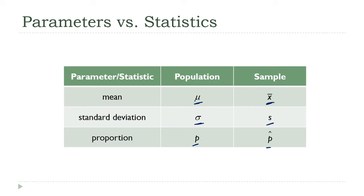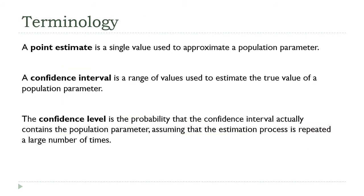We haven't talked a lot about proportions. When talking about a proportion, we use a regular p for the population proportion and p-hat for the sample proportion. A proportion refers to the proportion of a population that has a certain attribute — for example, the proportion of people who plan to vote a certain way, or who have test scores over a certain threshold. You can think of it as the decimal equivalent of a percentage. A point estimate is a single value used to approximate a population parameter — for example, the sample mean is a point estimate for the population mean.